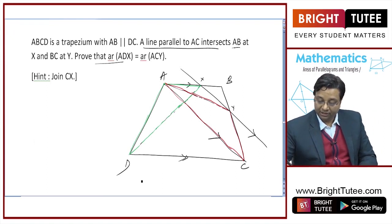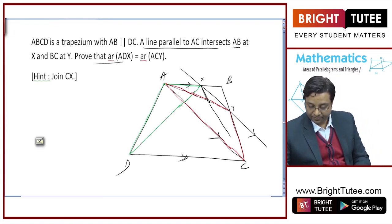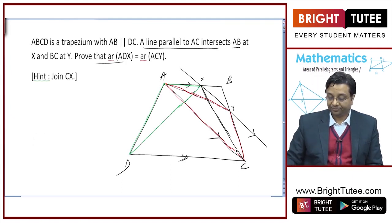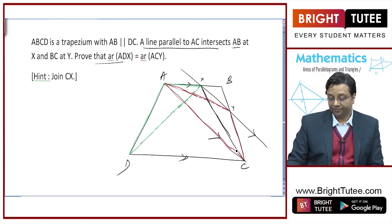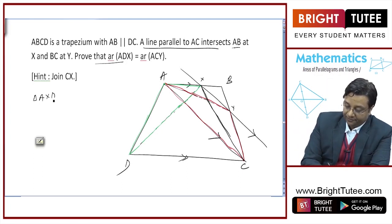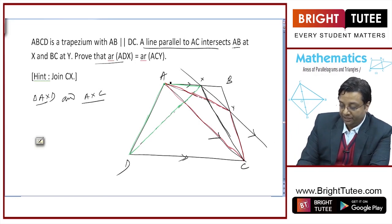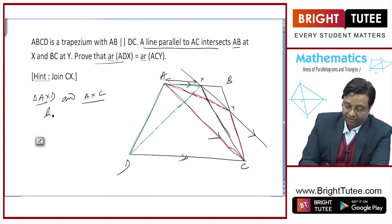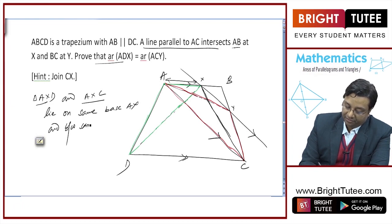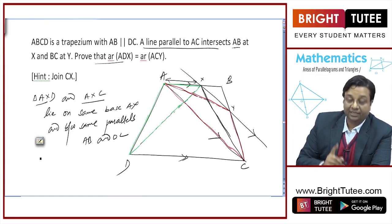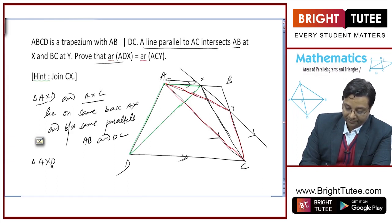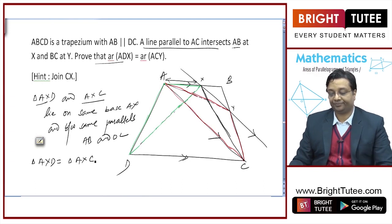Now, if you join points C and X, look at triangles AXD and AXC. These two triangles lie on the same base AX and between the same parallel lines AB and DC. Hence their areas will be equal. So area of triangle AXD will be equal to area of triangle AXC.